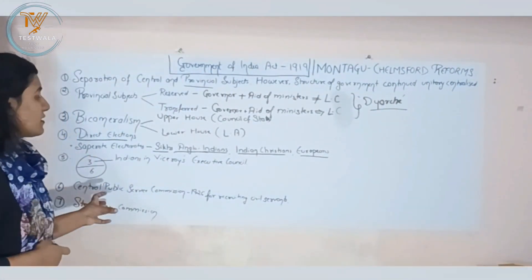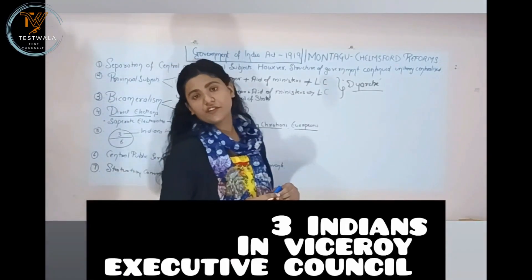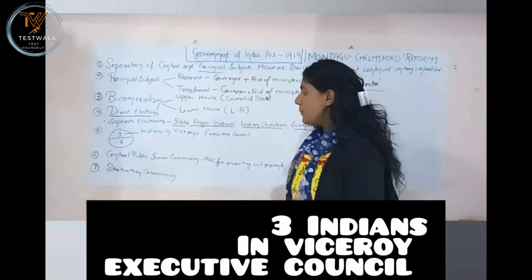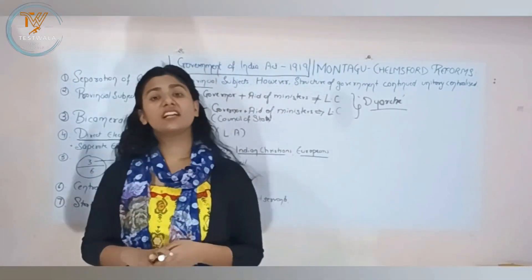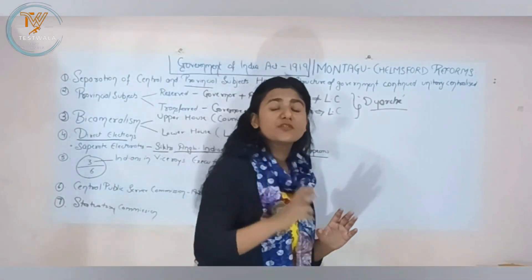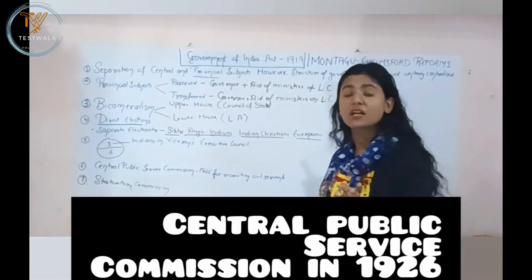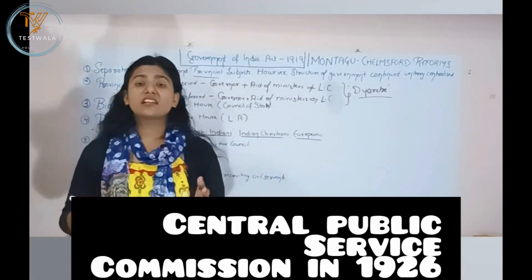Three members were in the Executive Council. They were also part of the Central Public Service Commission. This was the first Central Public Service Commission, dealing with Civil Services.